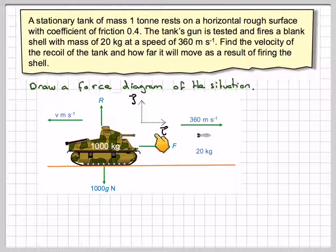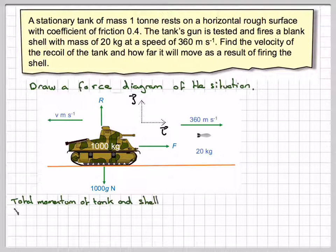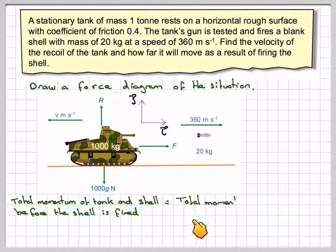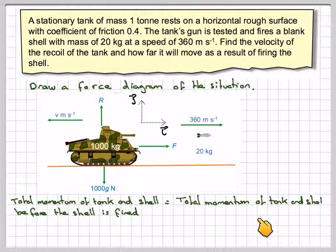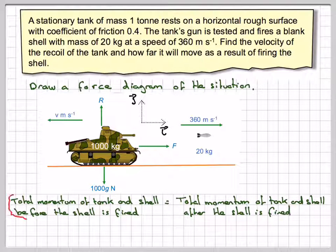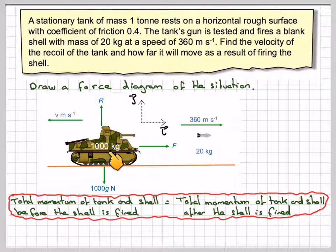We'll put on an IJ axis. The total momentum of the tank and the shell before the shell is fired will be equal to the total momentum of the tank and the shell after the shell is fired. Before the shell is fired, the tank has a velocity of 0 because it's stationary and the bullet will have an initial velocity of 0 as well.